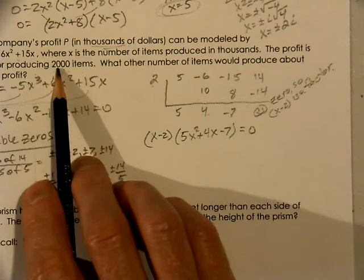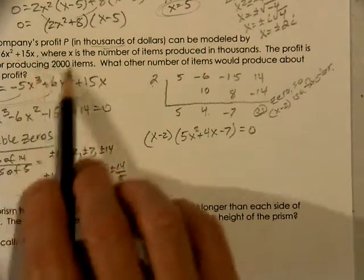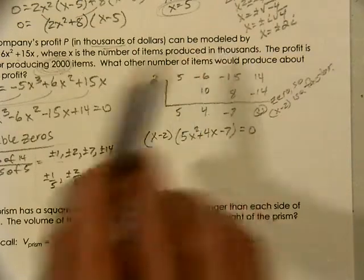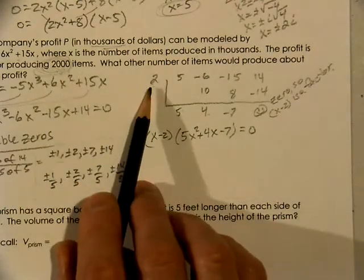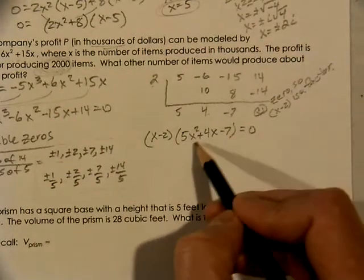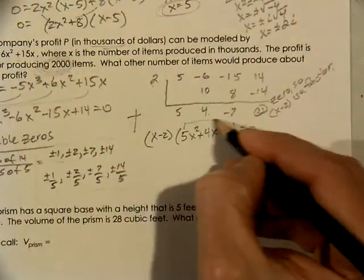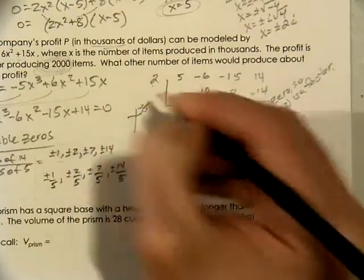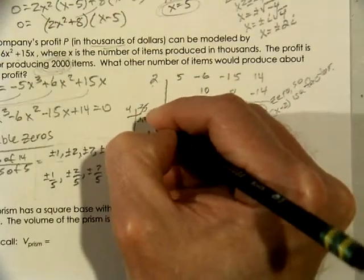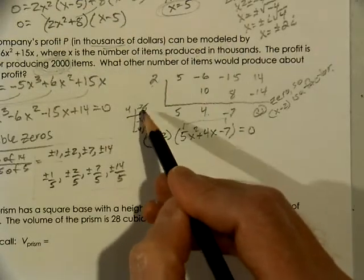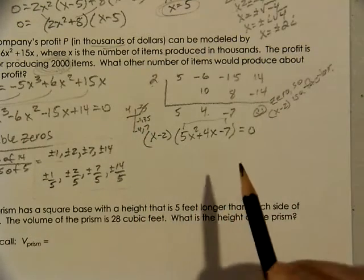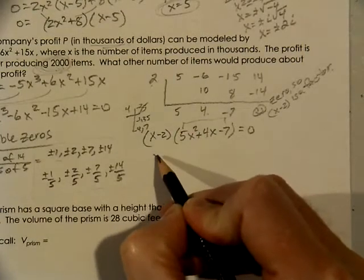So we know we have an answer of 2. But we knew that originally. I actually didn't even need to use my calculator. I knew that right from the problem that x stands for the number of products in thousands. So if we had 2,000 items, I knew that 2 was going to work. The question is, what is the other number that's going to work? So I look at this, I think about factoring what multiplies to be negative 35 and adds to be 4. And we're going to find out that nothing does. So I have to use quadratic formula.